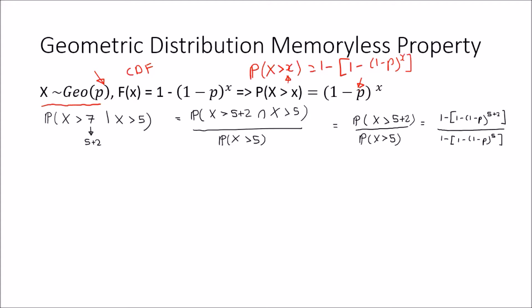So the probability that X is greater than seven — written as five plus two — given that we've already had to wait for more than five trials, is the probability of the intersection of these events divided by the conditioning event X greater than five. The probability that X is greater than five plus two intersecting with X greater than five is just the probability that X is greater than five plus two, since five plus two is already greater than five. So it's the probability that X is greater than five plus two, over the probability that X is greater than five.